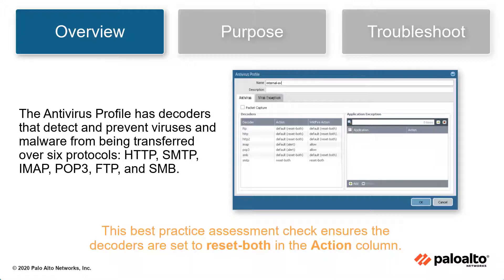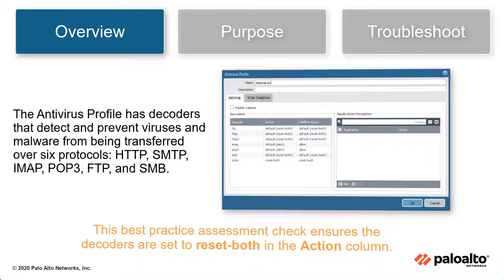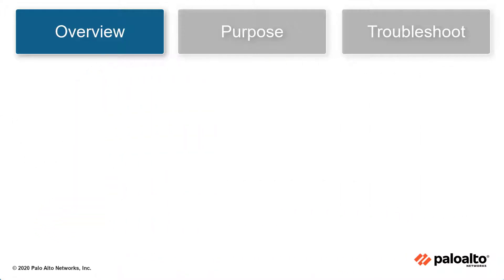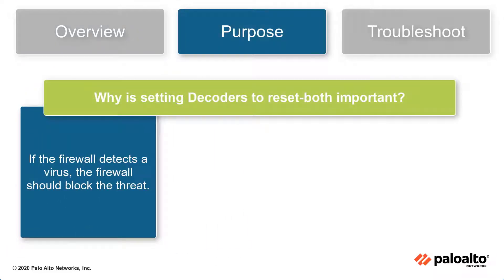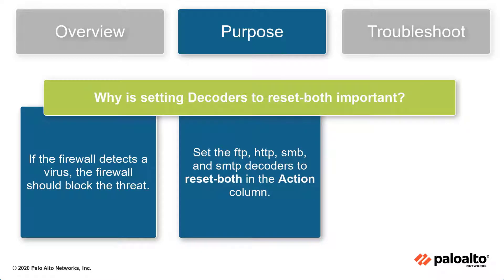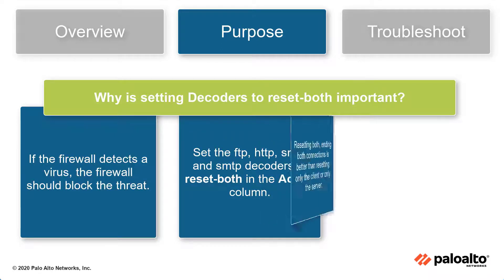The best practice check ensures decoders are set to Reset Both in the Action column. If the firewall detects a virus, the firewall should block the threat. To do that, set the FTP, HTTP, SMB, and SMTP decoders to Reset Both in the Action column.